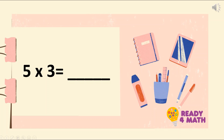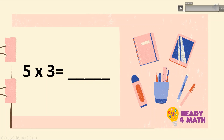What about this one? 5 times 3. Using your fingers, start skip counting by 3: 3, 6, 9, 12, 15. The answer is 15.